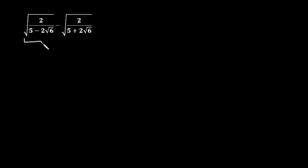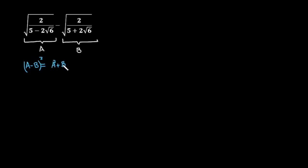Let us move on and solve this given expression. If I mark the first part of this expression as equal to a, and the second part as equal to b, then what will be the value of a minus b? We know the formula: a minus b squared is equal to a squared plus b squared minus 2ab. To calculate a minus b, we need the values of a squared, b squared, and a times b, and at the end we take the square root.